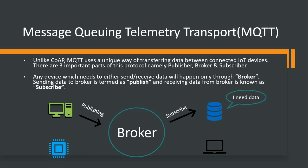MQTT is the best. MQTT uses a unique way of transferring data between connected IoT devices. There are three important components of this protocol: publisher, broker, and subscriber. Think of it like subscribing to a TV service — you subscribe for a particular channel and receive it. That is exactly the mechanism called publish and subscribe. You publish and subscribe, and there is something called a broker in between that plays a major role. Any device that has to send or receive data does so only through this intermediary component called the broker.